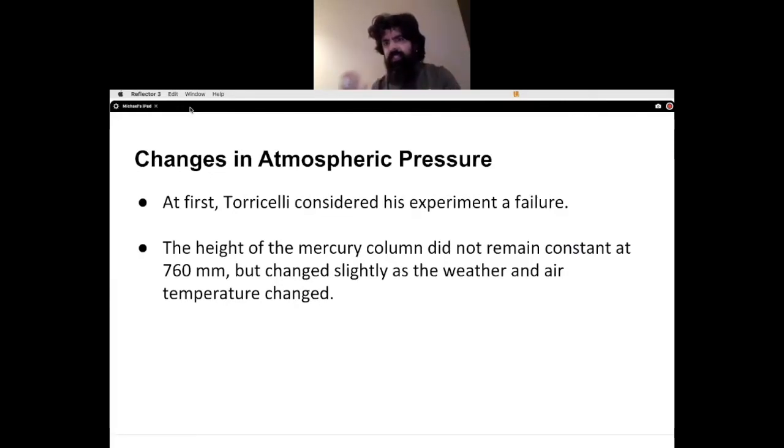He noticed that the height in which the mercury rose was about 760 millimeters. Hence the reason why they refer to a pressure unit as 760 millimeters mercury, representing the height of the tube that the mercury had rose and that we were using mercury to determine that value.